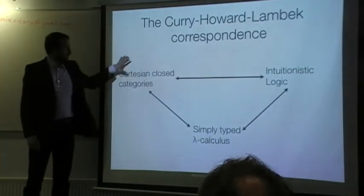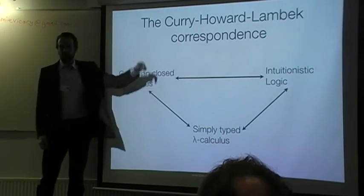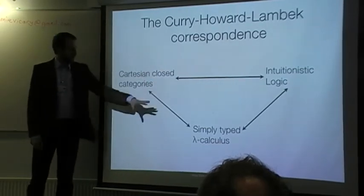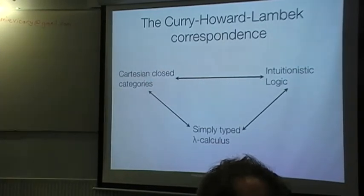And if we add on some categorical structures, which is Jim Lundbeck's name at the end here, we have this nice triangle. So in fact, the motivated question was, can you make something of this form for quantum theory?